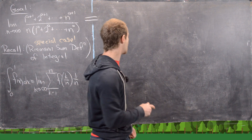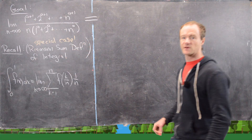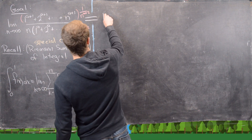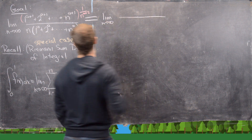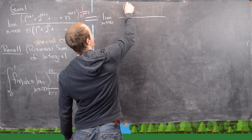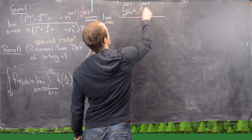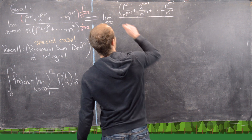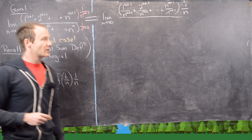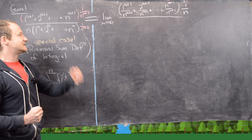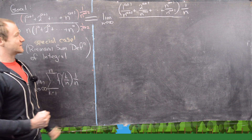We want to turn our original expression into something involving that Riemann sum form. The first thing I'm going to do is multiply the numerator and the denominator by 1/n^(a+2). In the numerator, I'll hold one of the n's out and distribute the rest through all the terms. That gives me (1^(a+1))/n^(a+1) + (2^(a+1))/n^(a+1), all the way up to n^(a+1)/n^(a+1), and then outside I have 1/n. So I split 1/n^(a+2) into (1/n) times (1/n^(a+1)) and distributed the 1/n^(a+1) through all the terms.